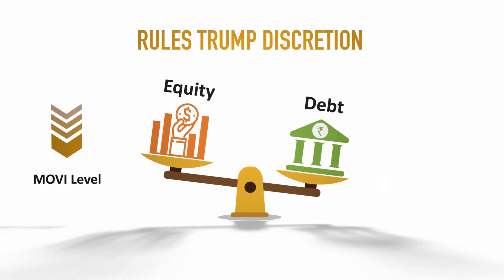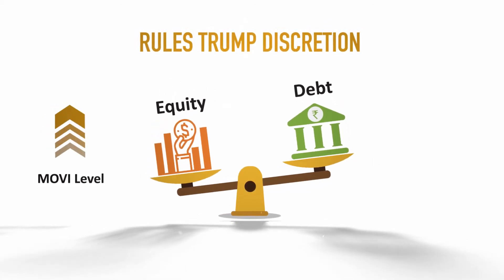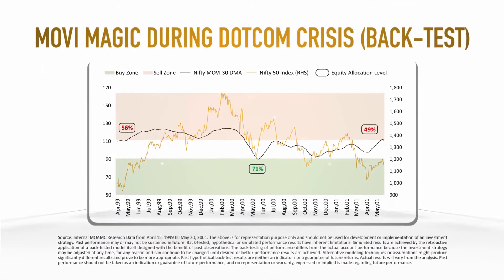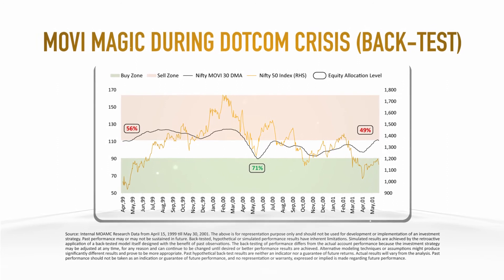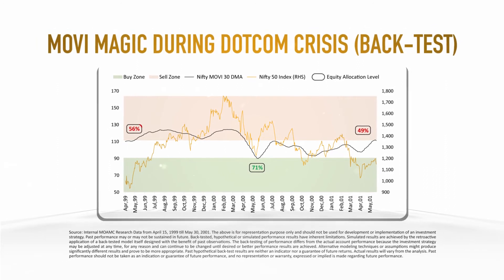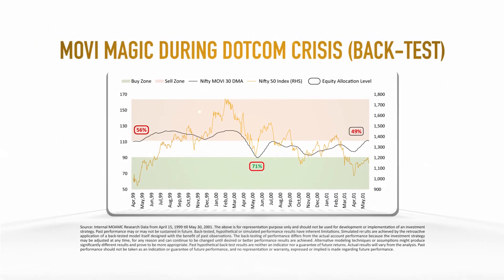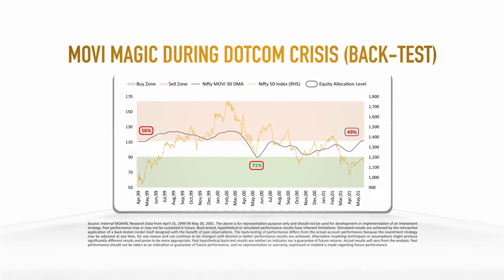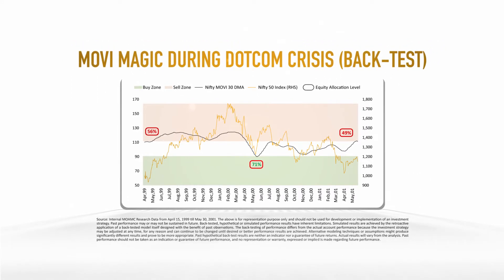Let's look at how MOVI would have worked across previous market cycles. During the dot-com crisis, the model suggests that investors should have increased equity allocation from 56% to 71% when markets corrected, and reduced the allocation to 49% as markets recovered.